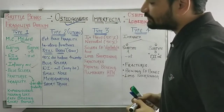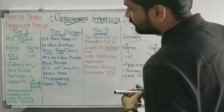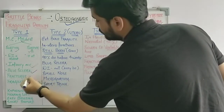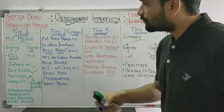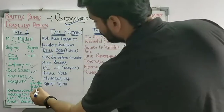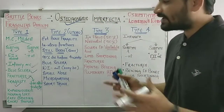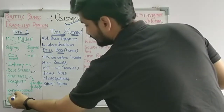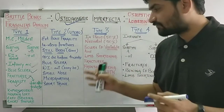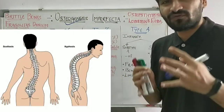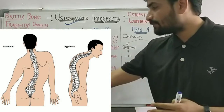In Type 1, you will see blue sclera. There will be fractures that decrease after the age of puberty — from infancy till puberty the fractures decrease. There will be mild to moderate fragility of the bones, and there is kyphoscoliosis.